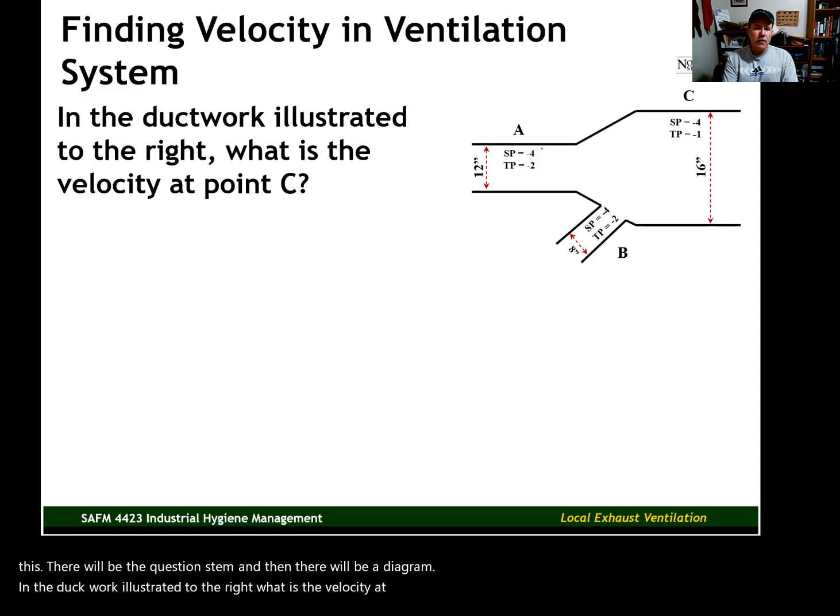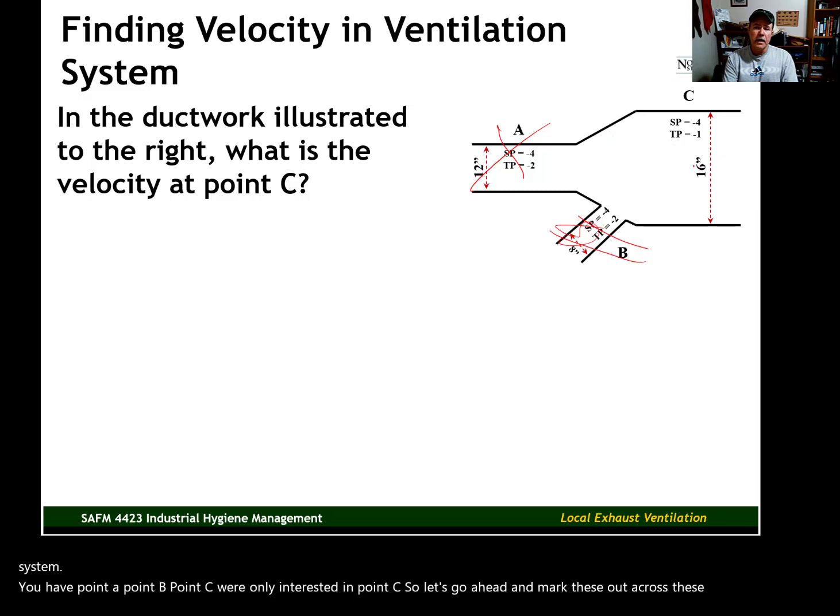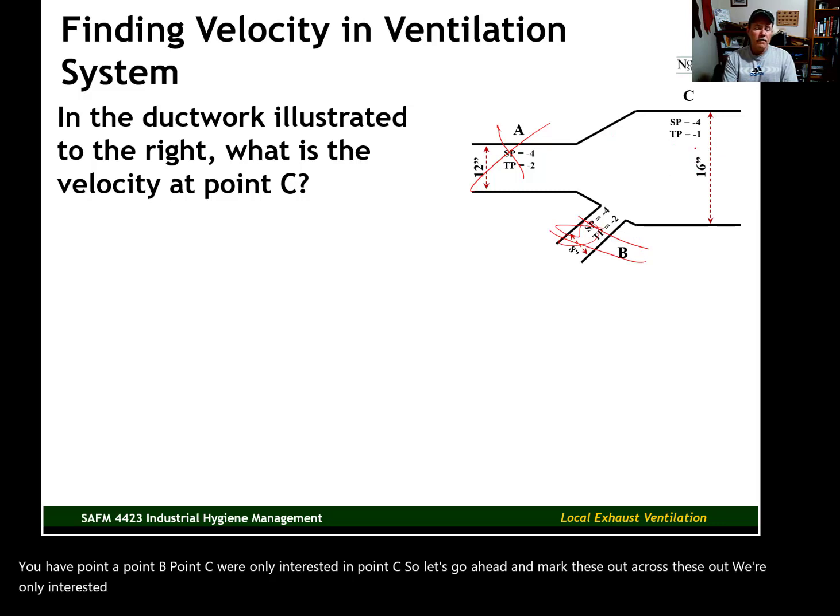You have three different points within this ductwork system. You have point A, point B, point C. We're only interested in point C, so let's go ahead and mark these out. Cross these out. We're only interested in what the velocity is in this 16-inch ductwork with a static pressure of minus 4 and a total pressure of minus 1.